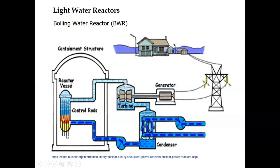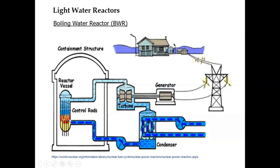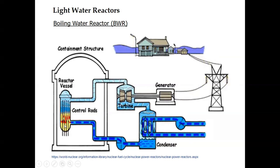Another difference is that the control rods in a boiling water reactor are inserted from the bottom, not from the top, because the liquid phase of the coolant is in the lower region and is more effective for moderation. Therefore, control is kept at the bottom so that controlling can be done with the help of more moderation, where it is possible to operate more effectively.